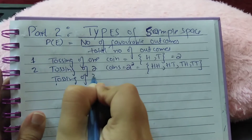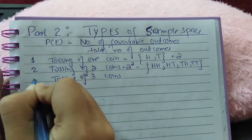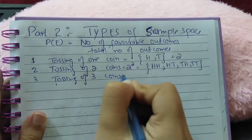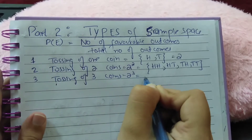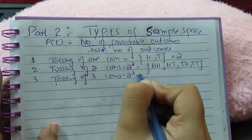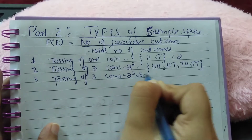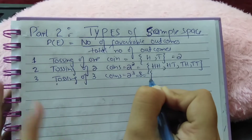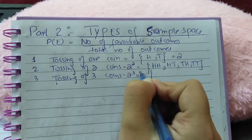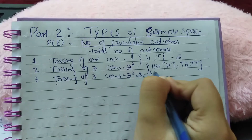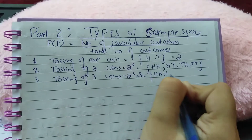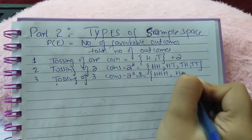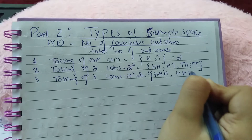Similarly, tossing of three coins together: two raised to the power three is eight, so there will be eight results. Starting from three heads and decreasing: head-head-head, head-head-tail, head-tail-head, tail-head-head, and continuing until all three are tails.